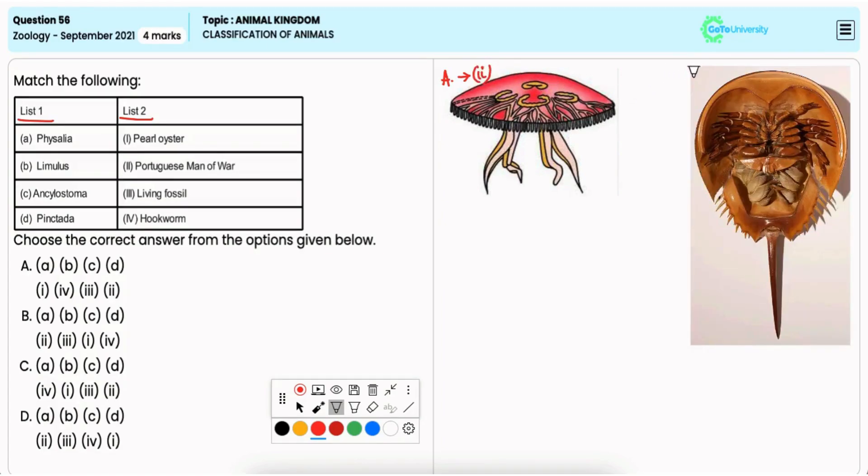Limulus, often termed as a living fossil, is a member of the phylum Arthropoda. Thus B matches with 3.